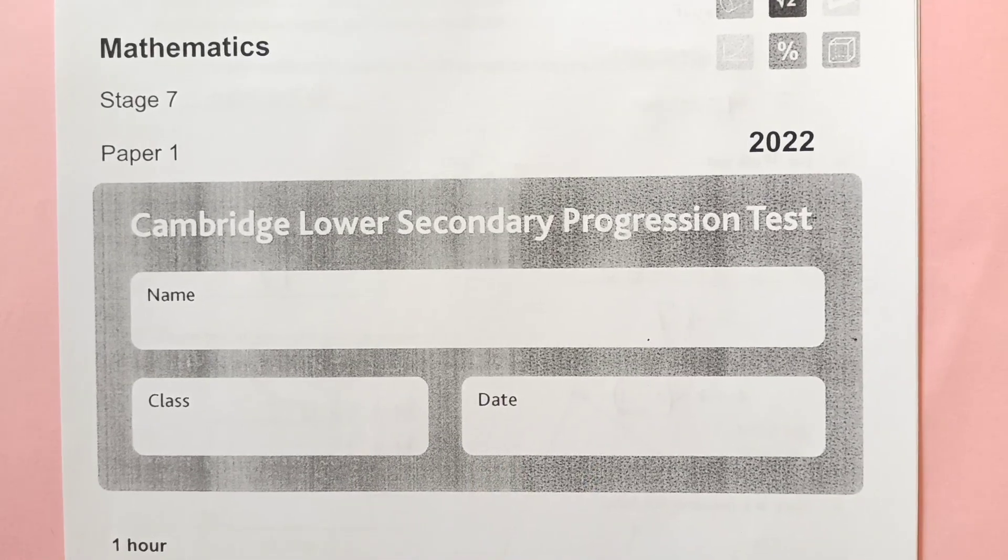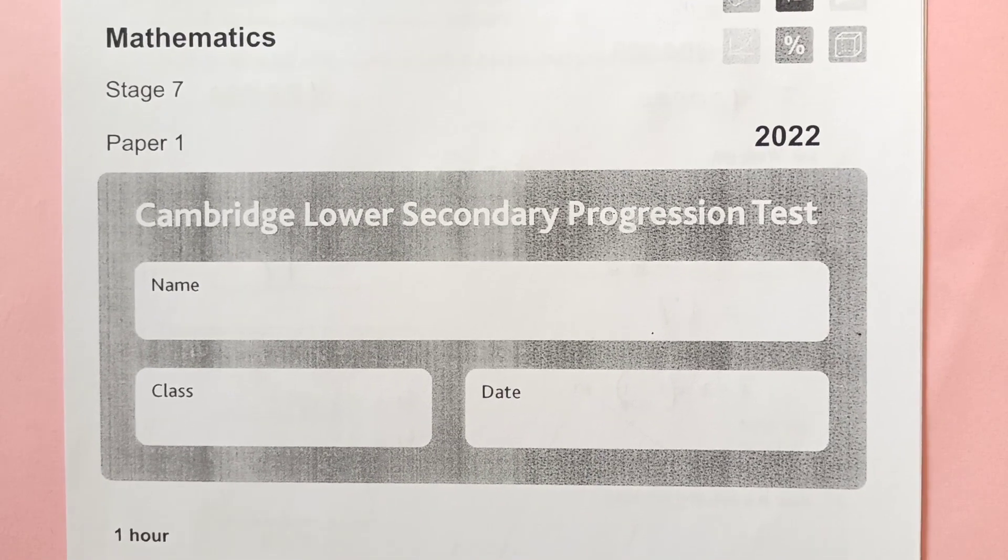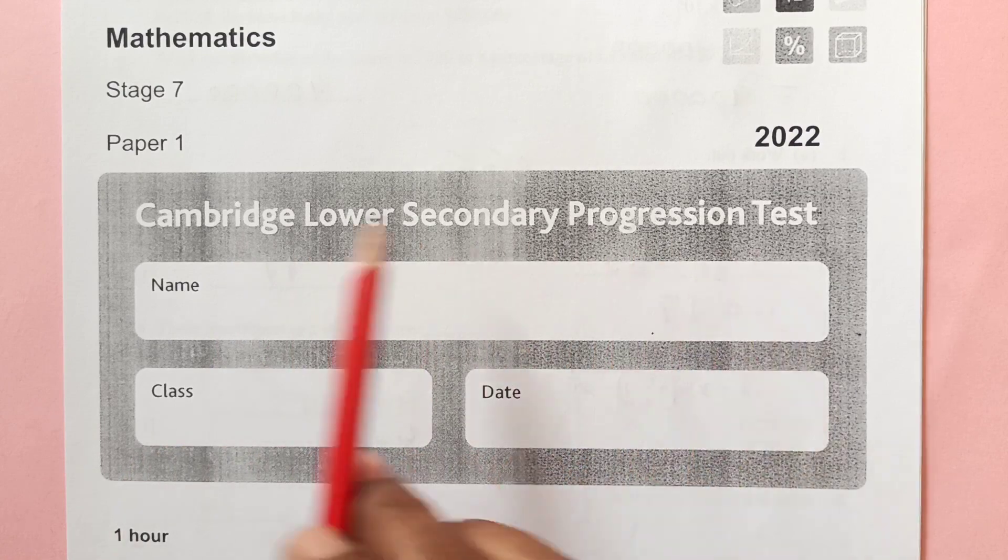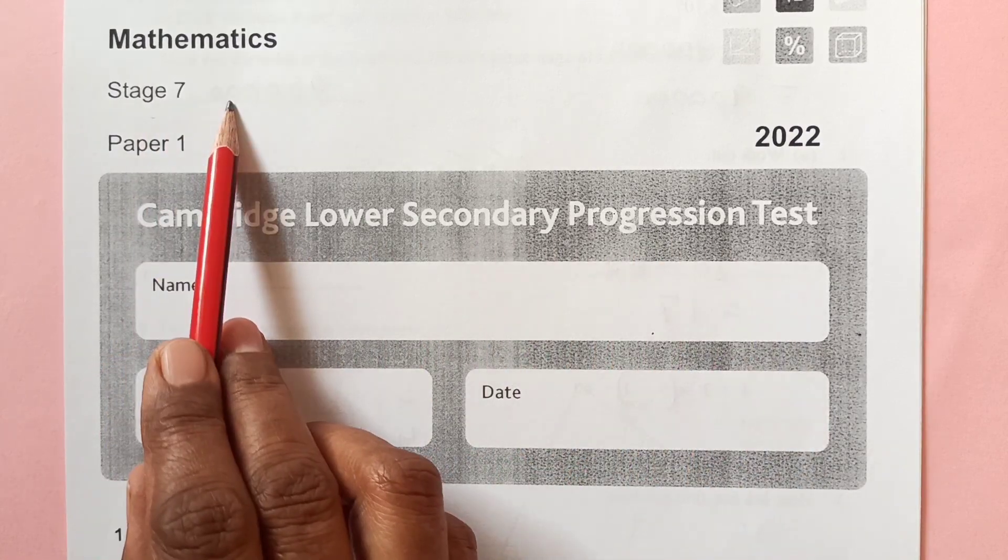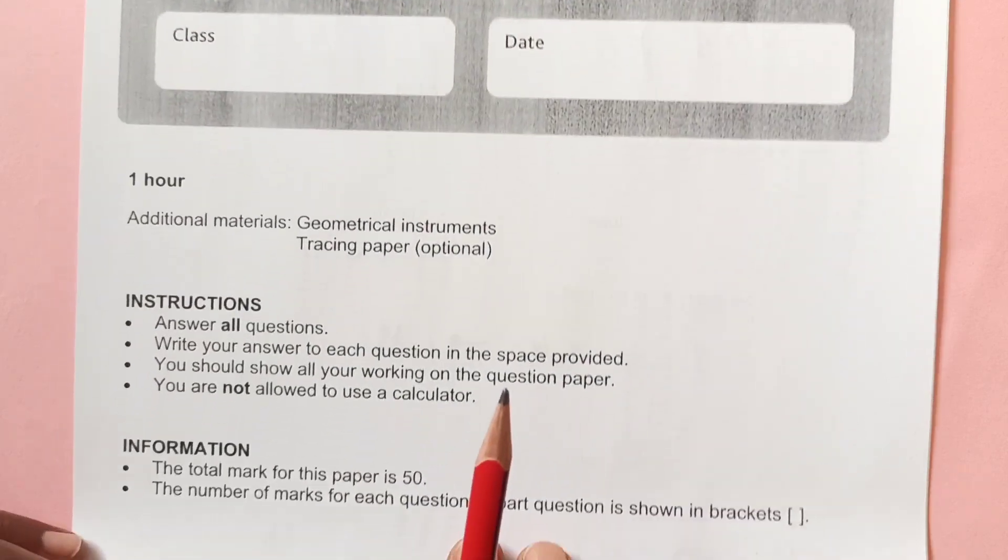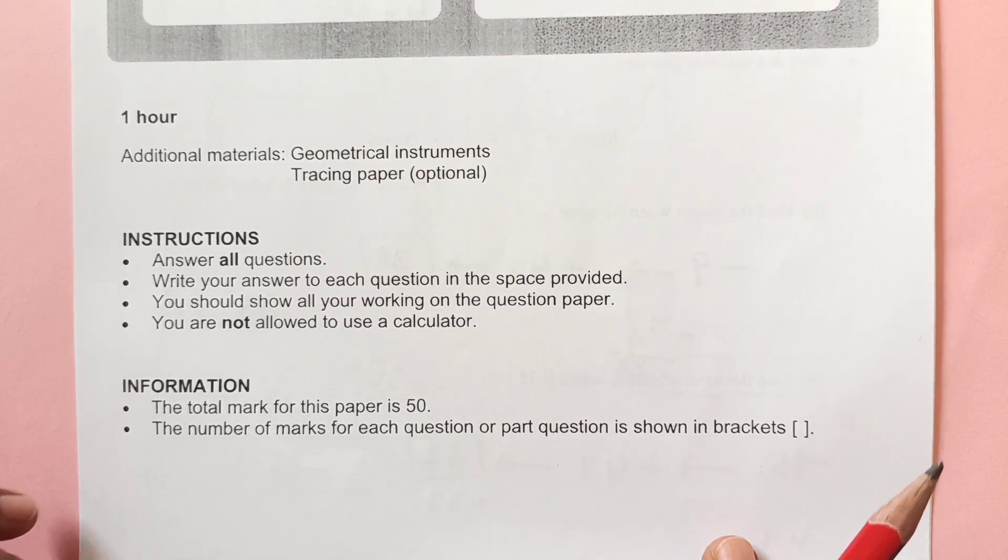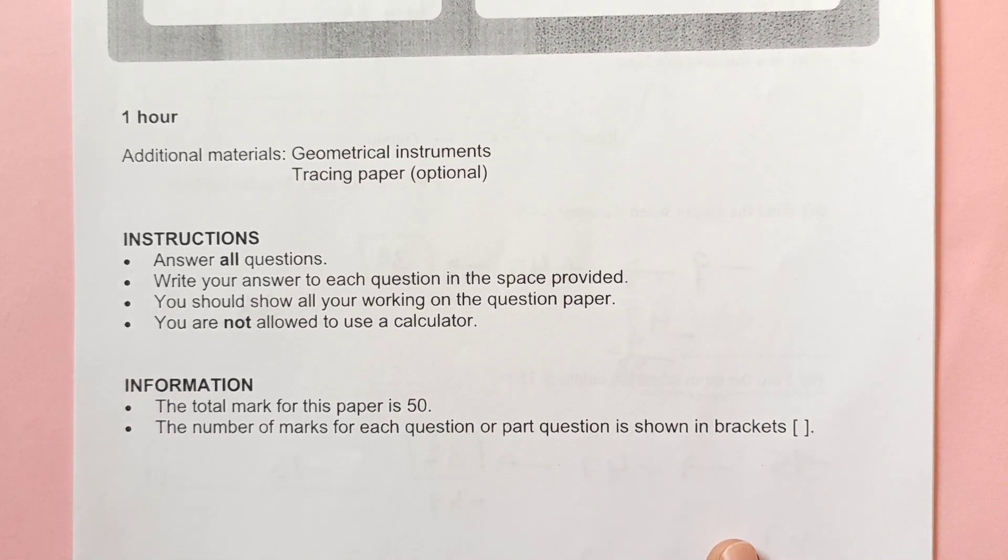Hello everyone, welcome back to my channel. This is the second part of Cambridge lower secondary progression test of stage 7 paper 1. Here are the instructions. You can have a screenshot and then you can go through that. In the first video we did questions 1 to 13. In this video we will cover up the remaining questions. So let's start.